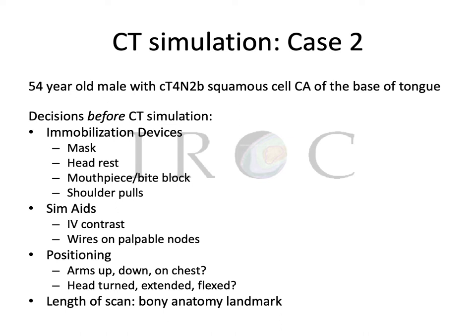I'll show you an example of a mask as well as a headrest. There are different types of mouthpieces and bite blocks that can be used. Some people like to use shoulder pulls to bring the shoulders down away from the neck. Other sim aids include IV contrast, particularly if you're going to be treating lymph nodes — though you have to consider whether your specific patient can tolerate it. You might also want to add wire markers on palpable nodes or marking any surgical incisions. Consider head positioning and give clear directions on the length of the scan you'd like.